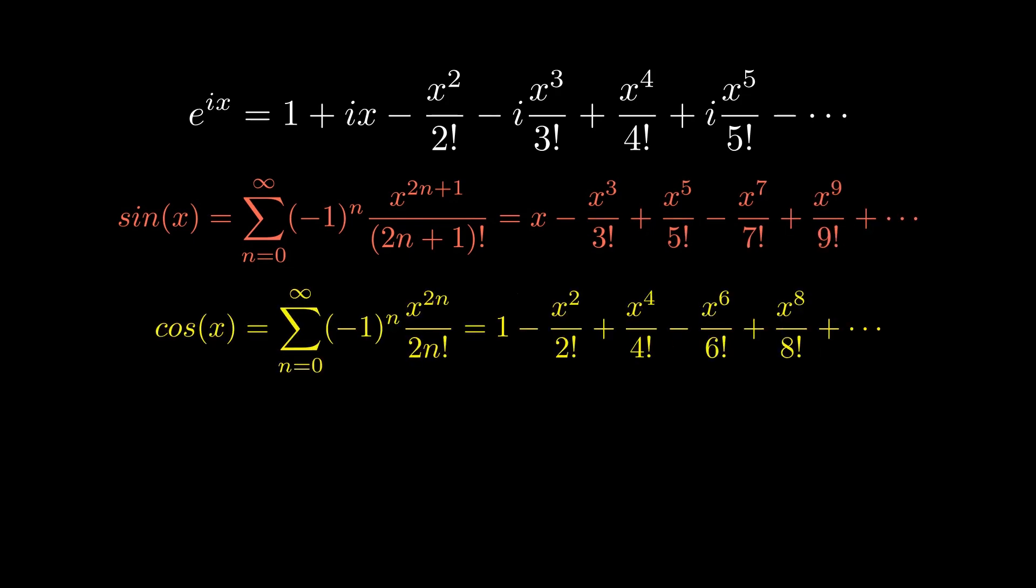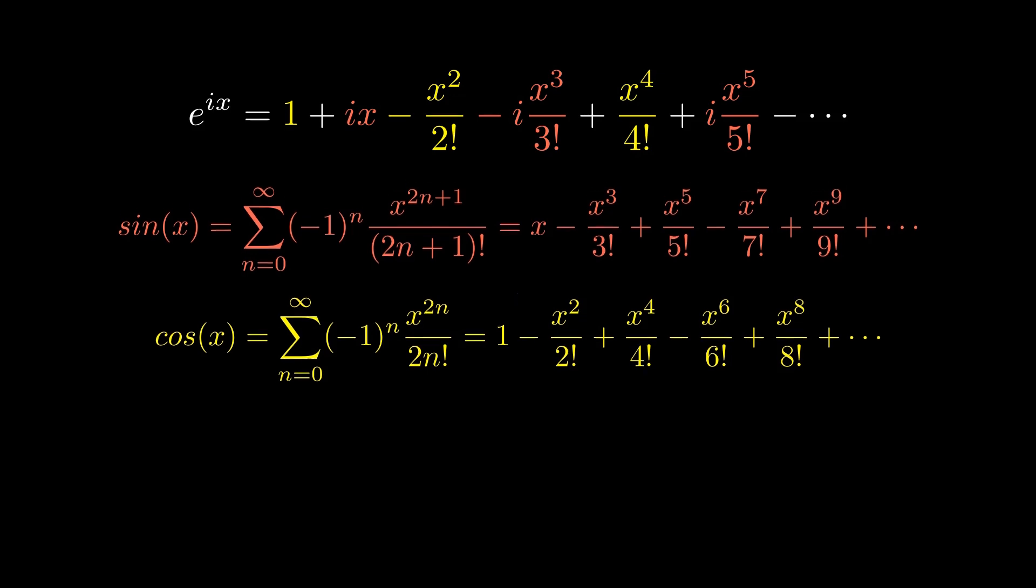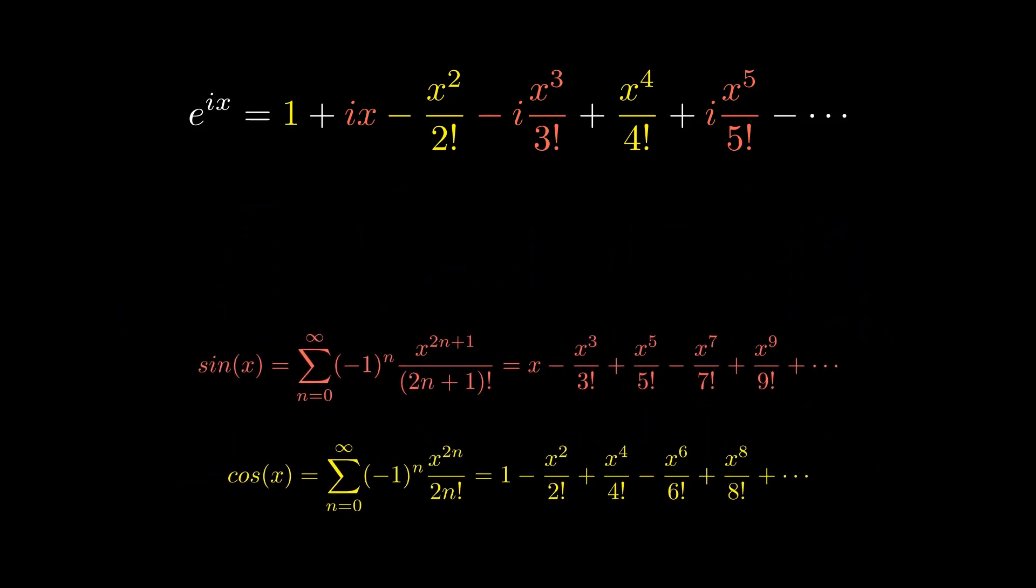Looking at our exponential series, you can see that the real values correspond to our cosine of x series while the polynomials with the i coefficient correspond to the sine of x series. I will highlight these terms for clarity. We can factor out our complex number i and see that the real portion of our e to the ix series is composed of the cosine of x function, while the imaginary portion of e to the ix is composed of our sine of x function. We can then plug in our cosine of x and our sine of x and behold Euler's identity in all of its glory.